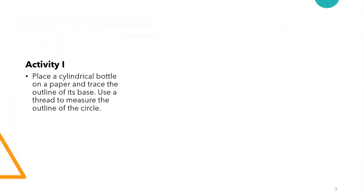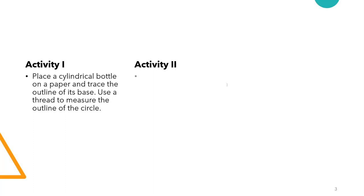We'll see an activity. You can perform this activity at home. Place a cylindrical bottle on a paper and trace the outline of its base. Use a thread to measure the outline of the circle. Second, measure the outline of a bangle with the help of a thread.